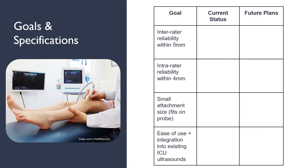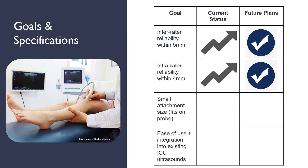Here is a table depicting the goals and specifications of our device. In the first column we have the goal itself, in the second column we have where we were at in achieving the goal before the break, and in the third column we have what we would have liked to continue to work on before our final presentations. For inter-rater reliability and intra-rater reliability, we've been making solid progress on this before the break. Joe will be showing in a few slides some preliminary data that we collected that shows we were close to meeting these specifications, and we feel that had we been able to continue working on them, we would have definitely achieved them.